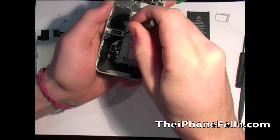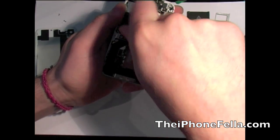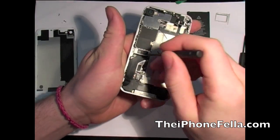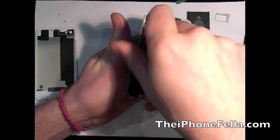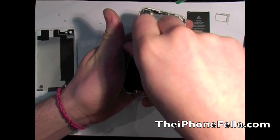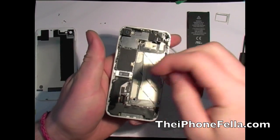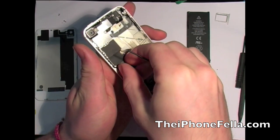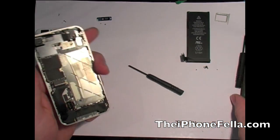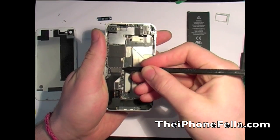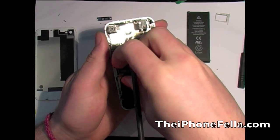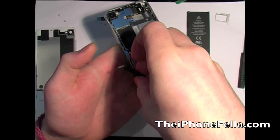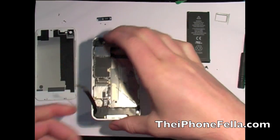Next, remove the two screws for the cover of the dock connector cable. I'm just going to use this plastic pry tool to disconnect it. Now peel back the cable. Be careful not to apply too much force and break it.